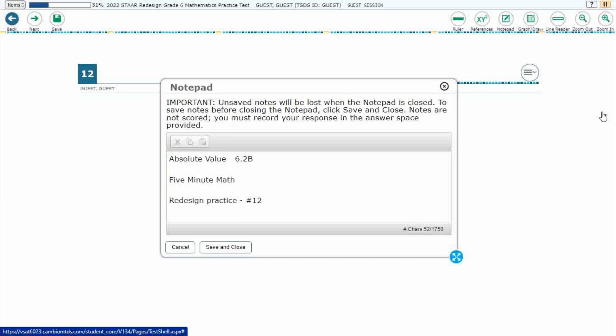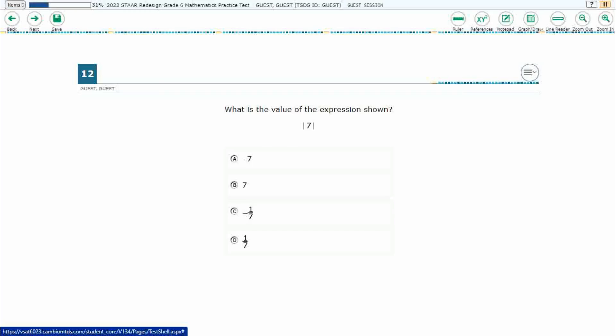Hello, and welcome to 5-Minute Math. Today we are looking at the 6th grade concept of absolute value. This is standard 6.2b in the great state of Texas, and we are using item number 12 of the Redesign Practice Online Star Test.